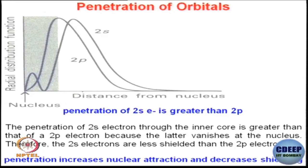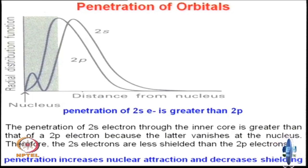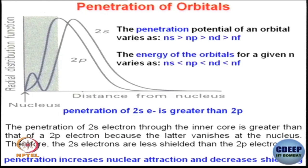If you compare 2s versus 2p by overlapping their distribution curves, you can see that the penetration of the 2s electron is greater than the 2p electron, because there is a very good component of 2s very close to the nucleus. The penetration of the 2s electron through the inner core is greater than that of the 2p electron because the 2p electron vanishes at the nucleus, whereas 2s electrons are still present there. Therefore, 2s electrons are less shielded than 2p electrons, and penetrate much more compared to 2p electrons.